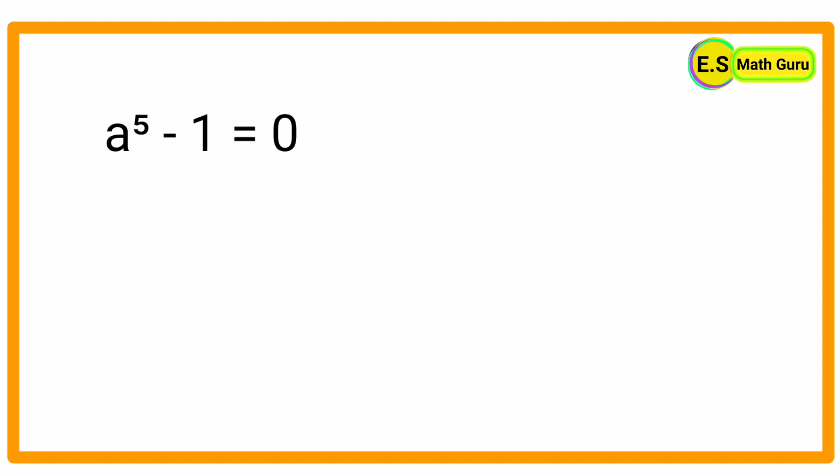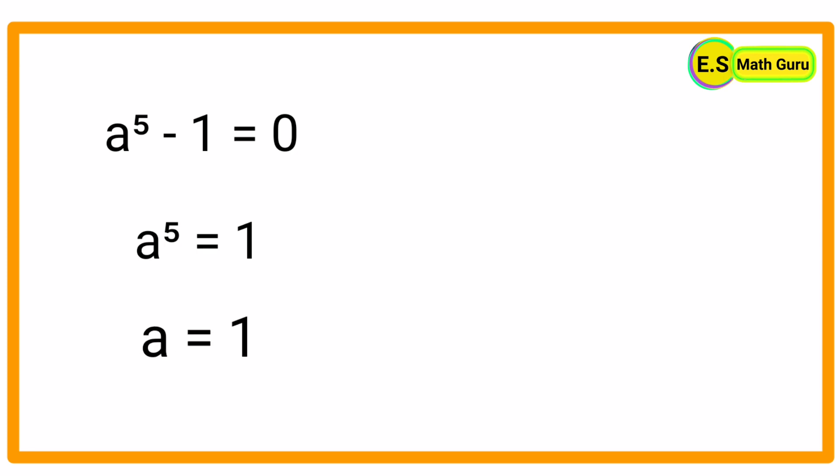Now let us solve the equation a⁵ − 1 = 0 by transposing −1 from the LHS to the RHS. Then we get a⁵ = 1. From this, we can conclude that the value of a is equal to 1.